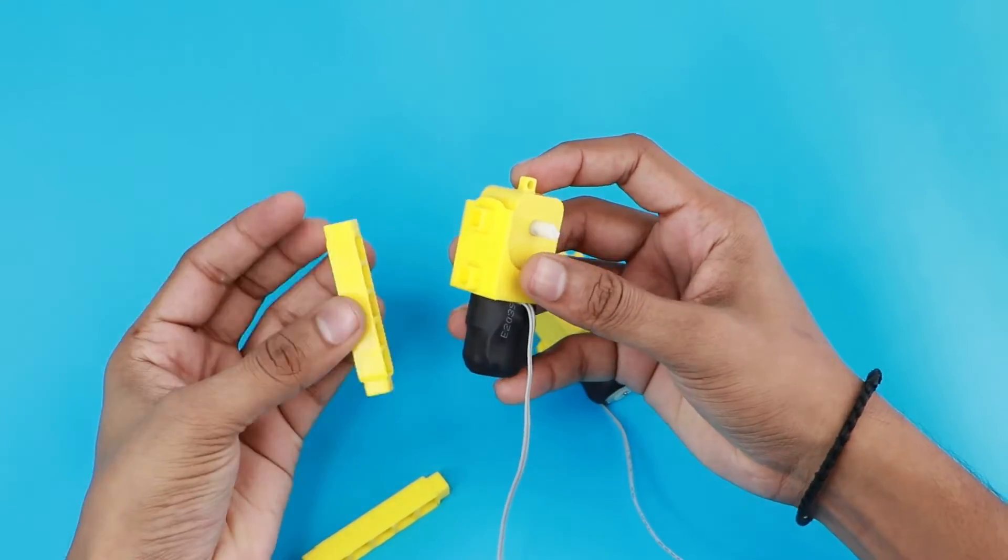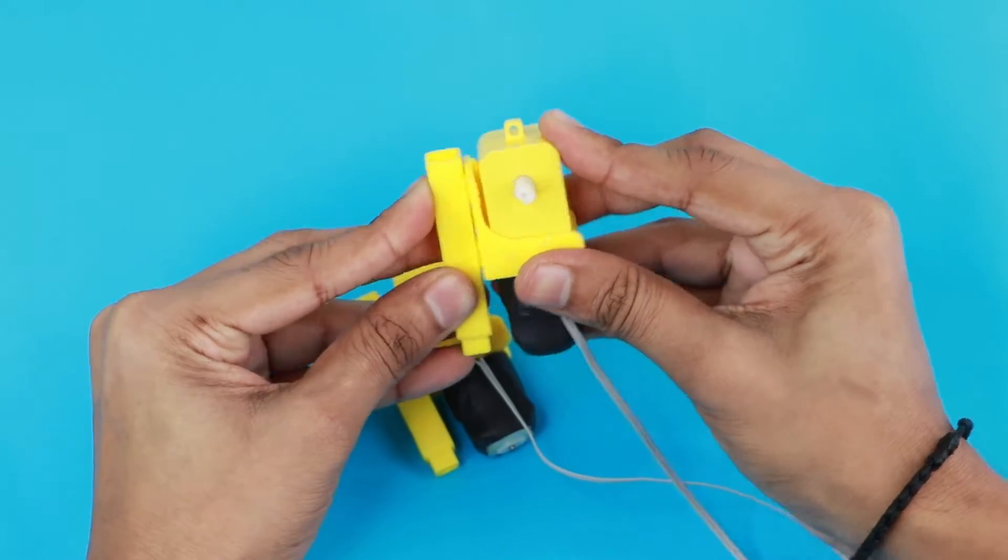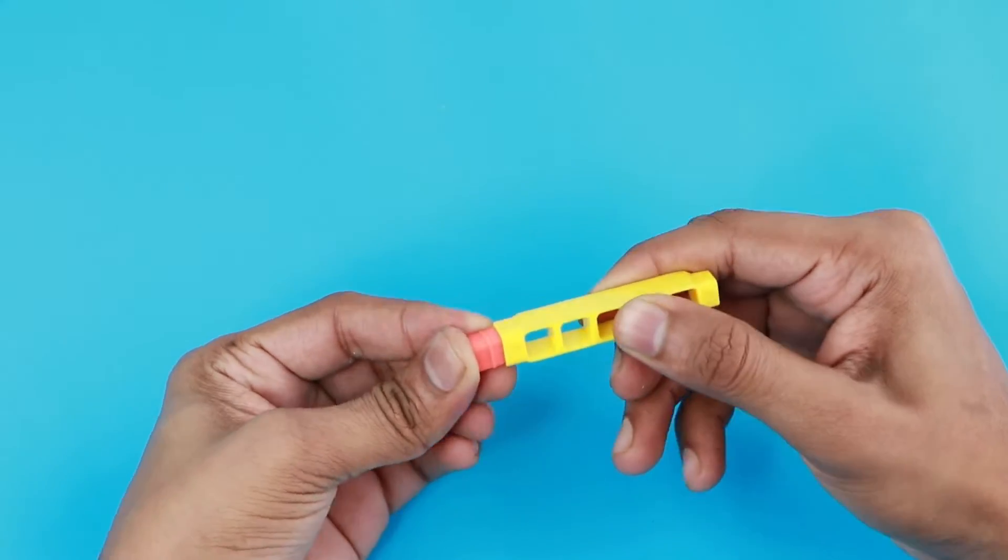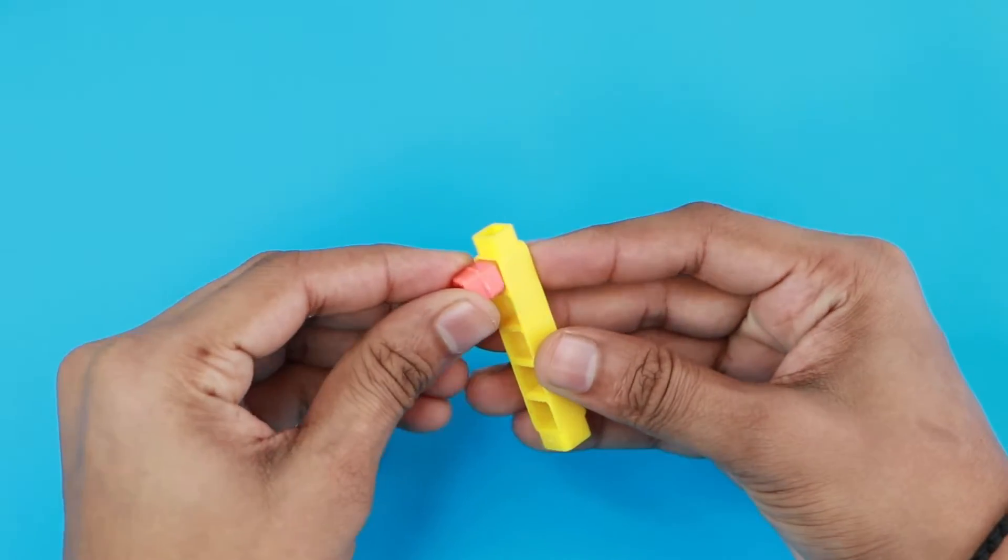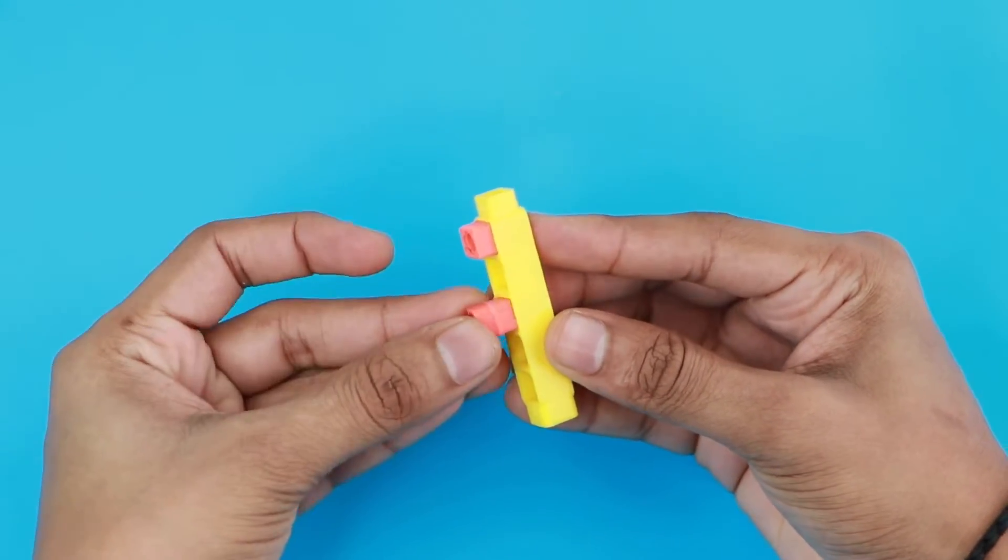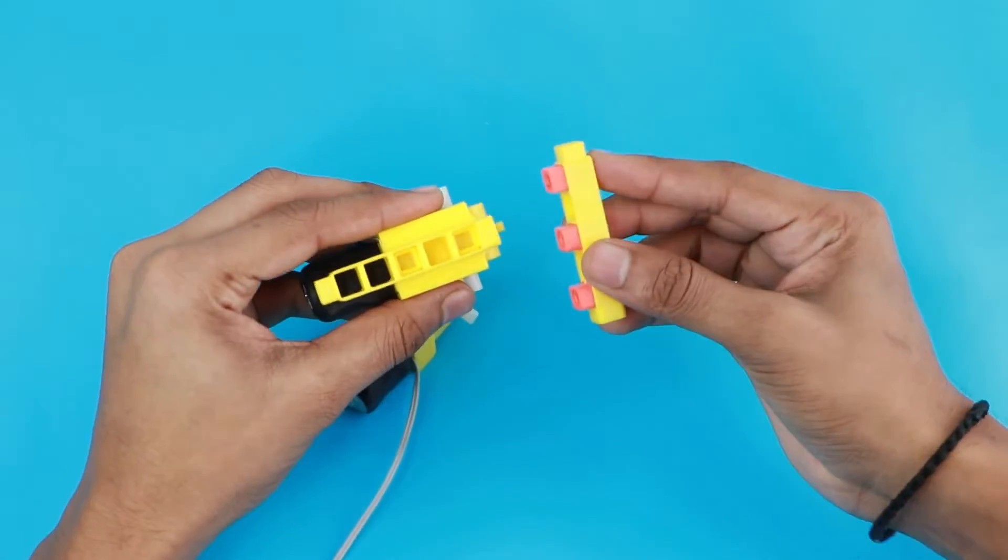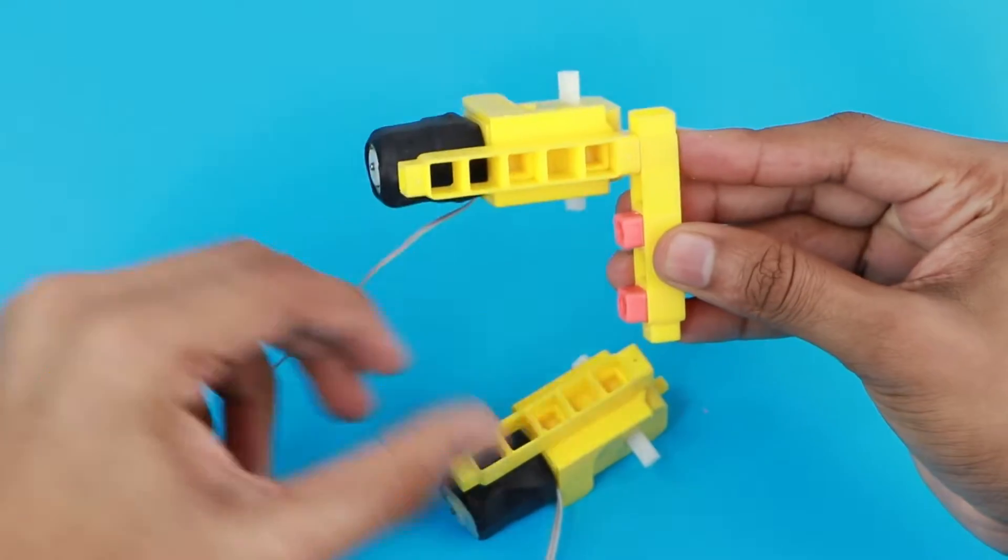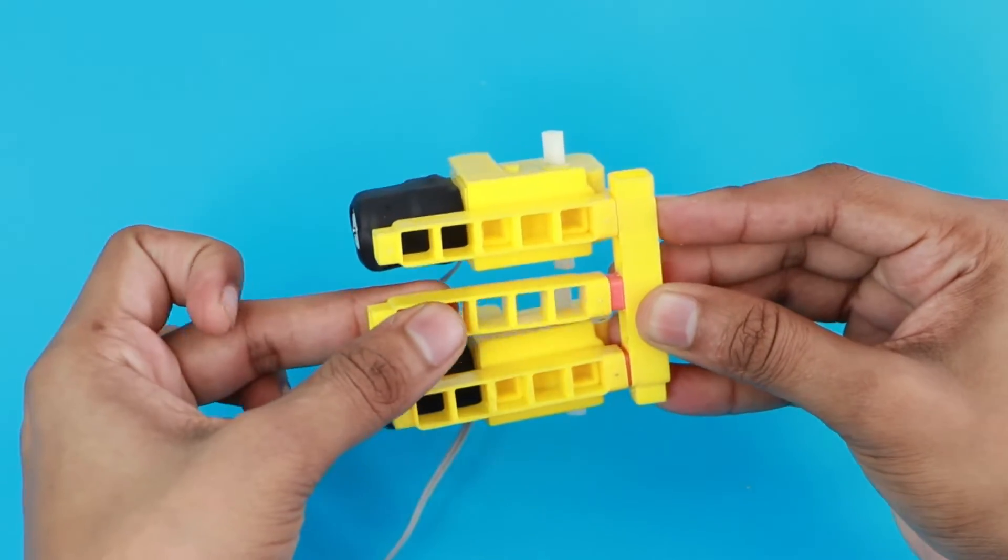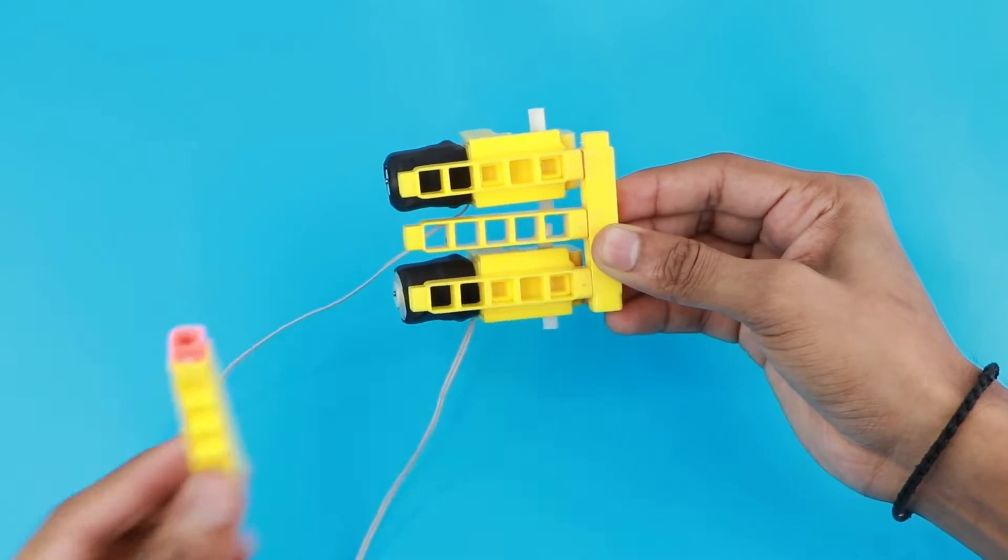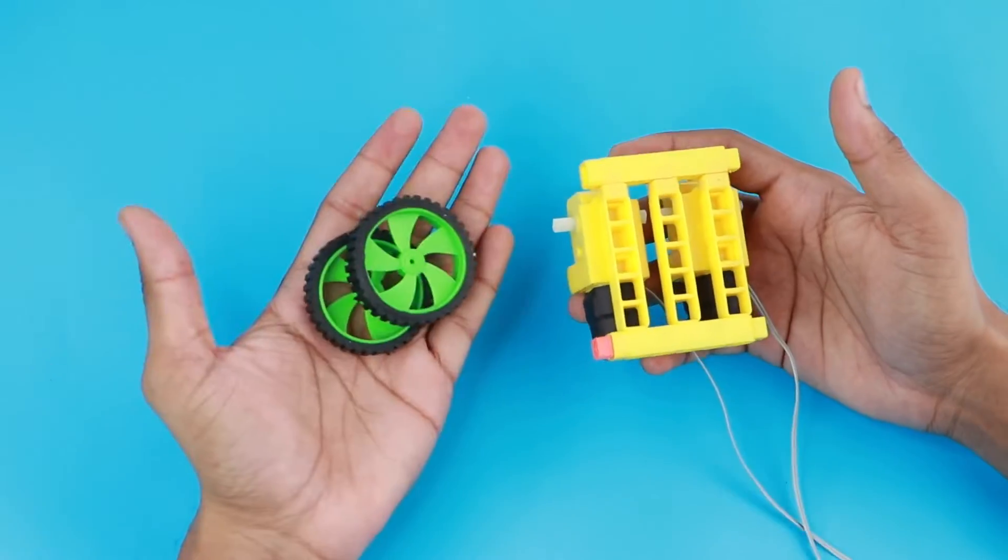To build the structure, we will need two D.O. motors. We will attach them using a 5-hole beam. Now let us create a car chassis. We will use more 5-hole beams and join them using male-to-male connectors. Now let's attach the wheels to the motor.